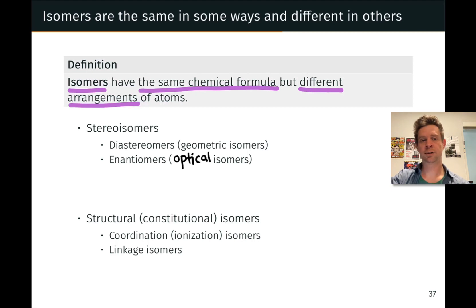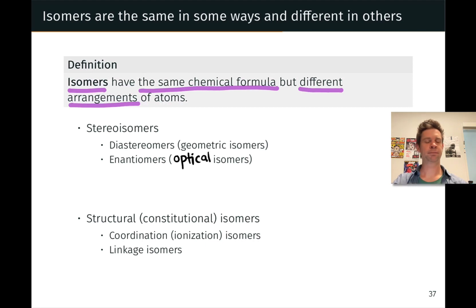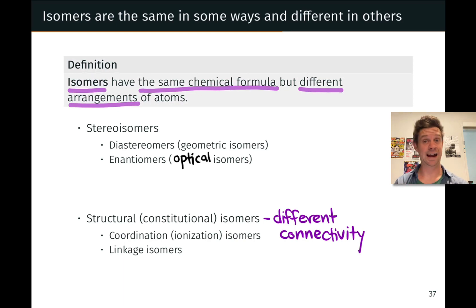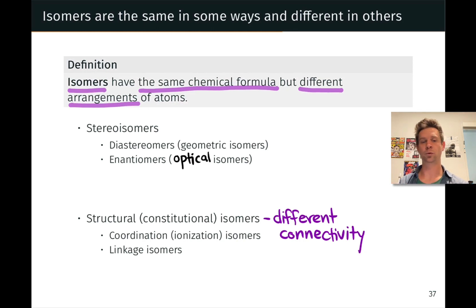We're going to look at two different types of isomers: structural or constitutional isomers, and what are called stereoisomers or spatial isomers. Structural or constitutional isomers have different connectivity of their atoms — they have the same chemical formula, the same numbers and types of atoms, but those atoms are connected in different ways. We'll look at two specific classes in this unit: coordination isomers and linkage isomers.